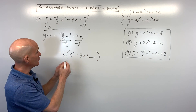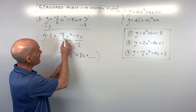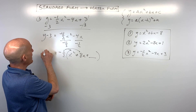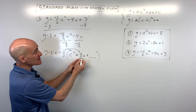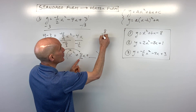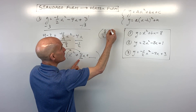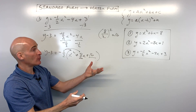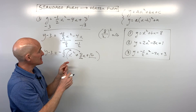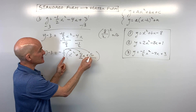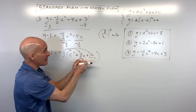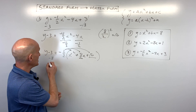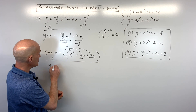If you're not sure you factored correctly, distribute the negative one-half back: negative one-half times x squared gives negative one-half x squared, and negative one-half times 8x gives negative 4x — it matches. Now complete the square: half of 8 is 4, and 4 squared is 16. If you add 16 inside the parentheses, it's actually negative one-half times 16, which is negative 8. So we're adding negative 8 to the right side, and must add negative 8 to the left side to keep the equation balanced.